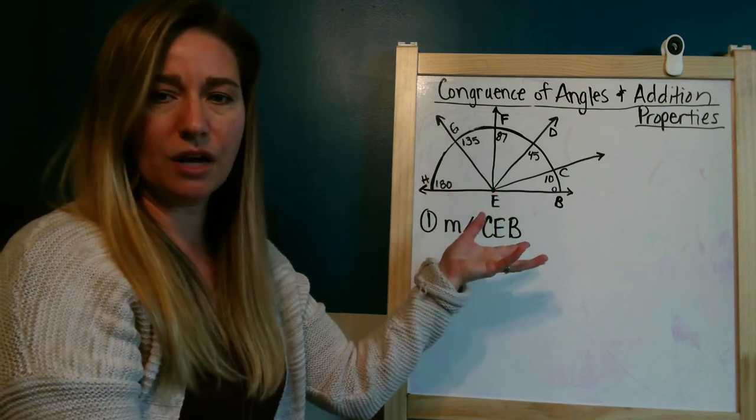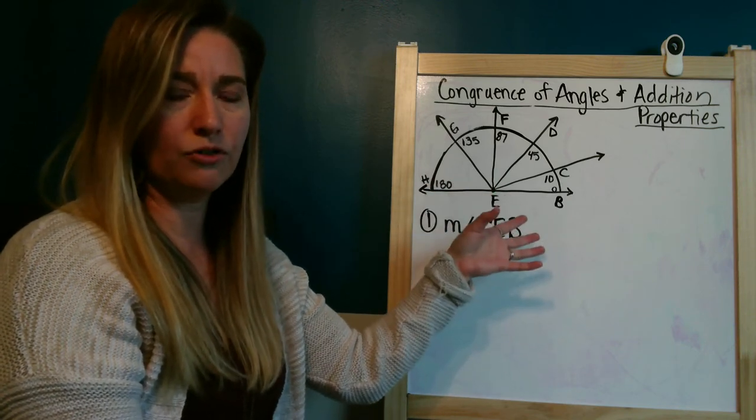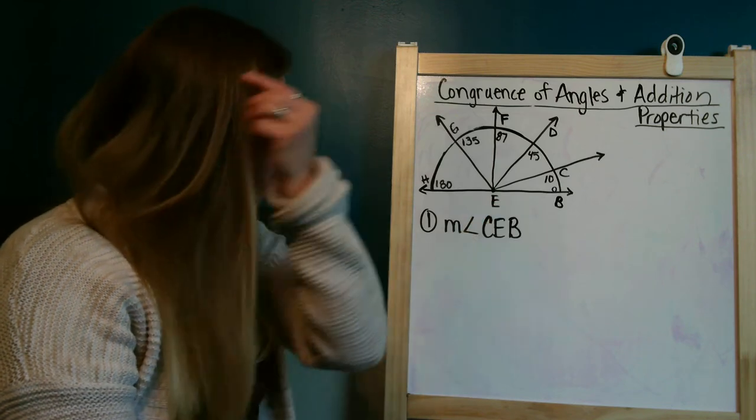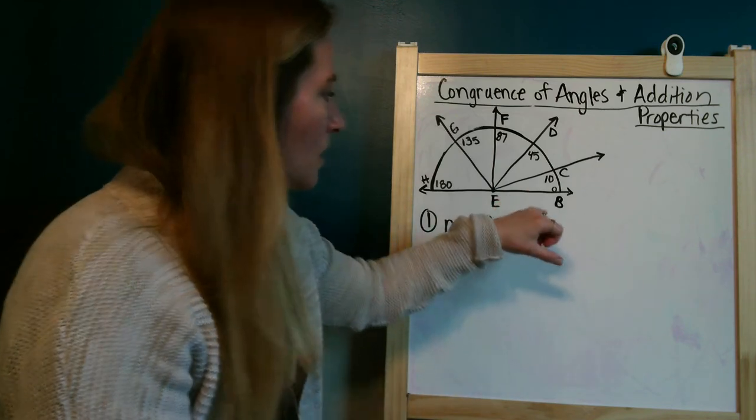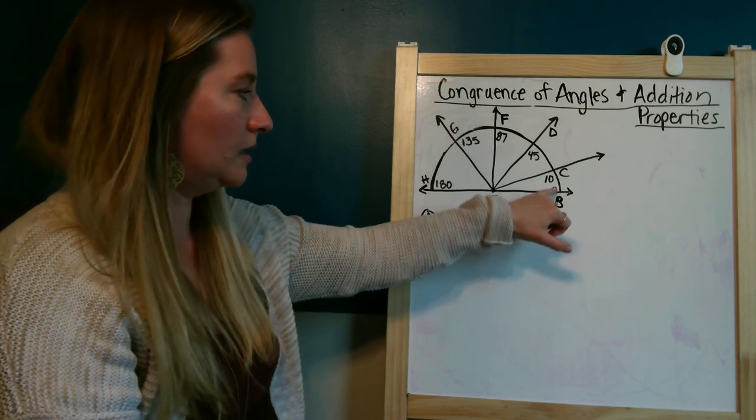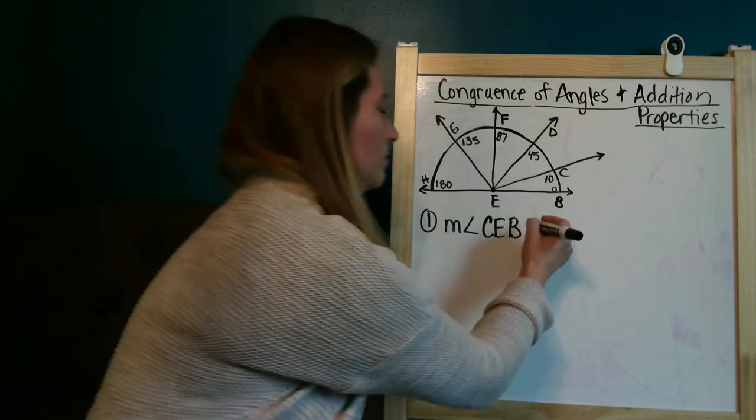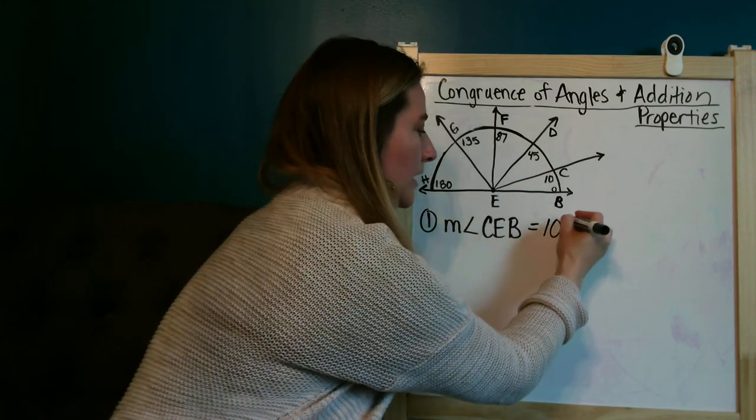Those are what are going to be accurate. The image is not drawn to scale, so please do not get a protractor and start measuring. Go based on the math information that they gave you. So CEB is measuring 10 degrees. So right here I will put 10 degrees.